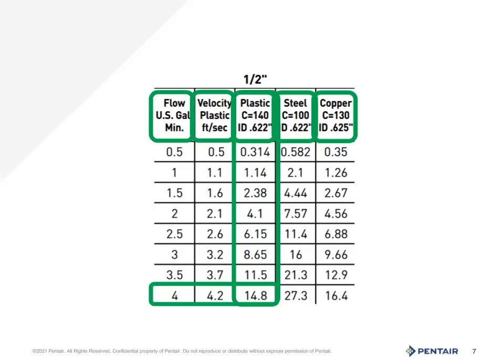Remember, on the suction side we strive to remain under five feet per second, and on the discharge we try to keep it under seven feet per second ideally. And finally, the friction loss, which in this case is expressed in feet of head for plastic. In this example, we see that the loss is 14.8 feet of head per 100 feet, as the chart was based upon 100 foot lengths. A quick point to remember: if you divide 14.8 by the magic number 2.31, you'll get the pressure loss, which is 6.4 PSI.